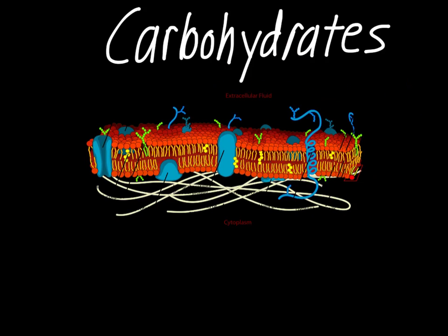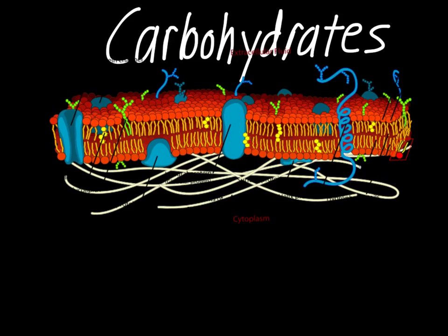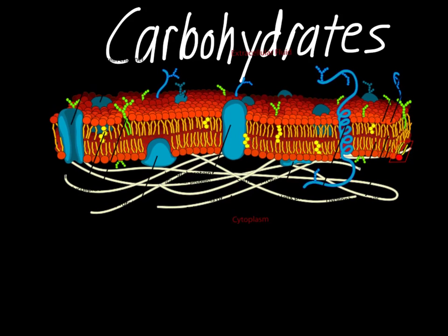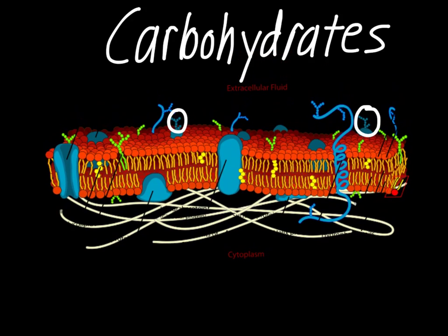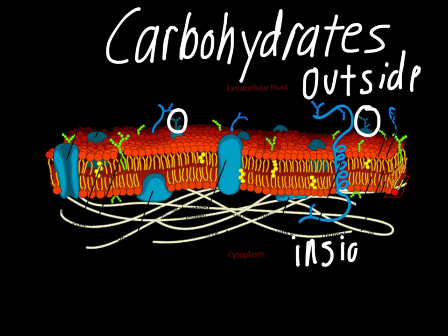The last one to talk about are carbohydrates. They're mounted on top of some of these proteins. One important thing to notice is that they're only found on the outside of the cell — remember, the extracellular fluid is up here, meaning the outside of the cell is on top, and the part below is the inside. So we've got outside the cell and inside the cell.